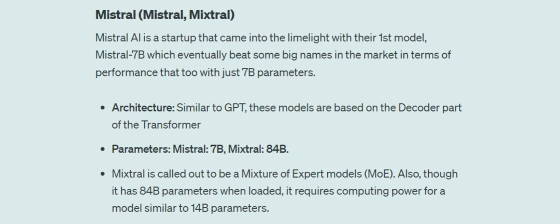One model that has been in the news for a long time is Mistral — a French startup which came into the limelight with its Mistral 7 billion parameter model, which outperformed LLaMA 13 billion parameter models. So with half the parameters, it was able to beat a model offered by Meta — that was a big deal at the time.